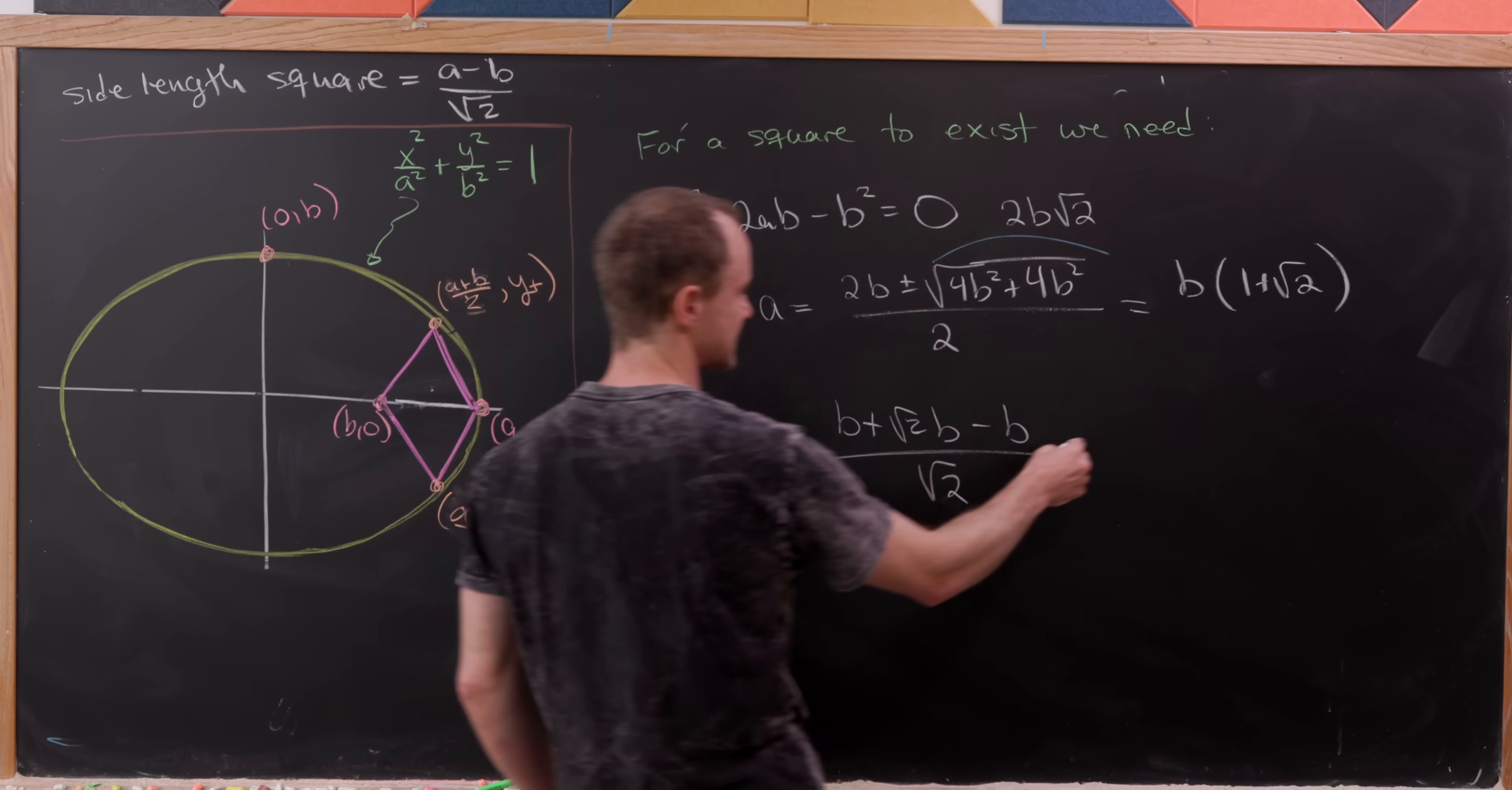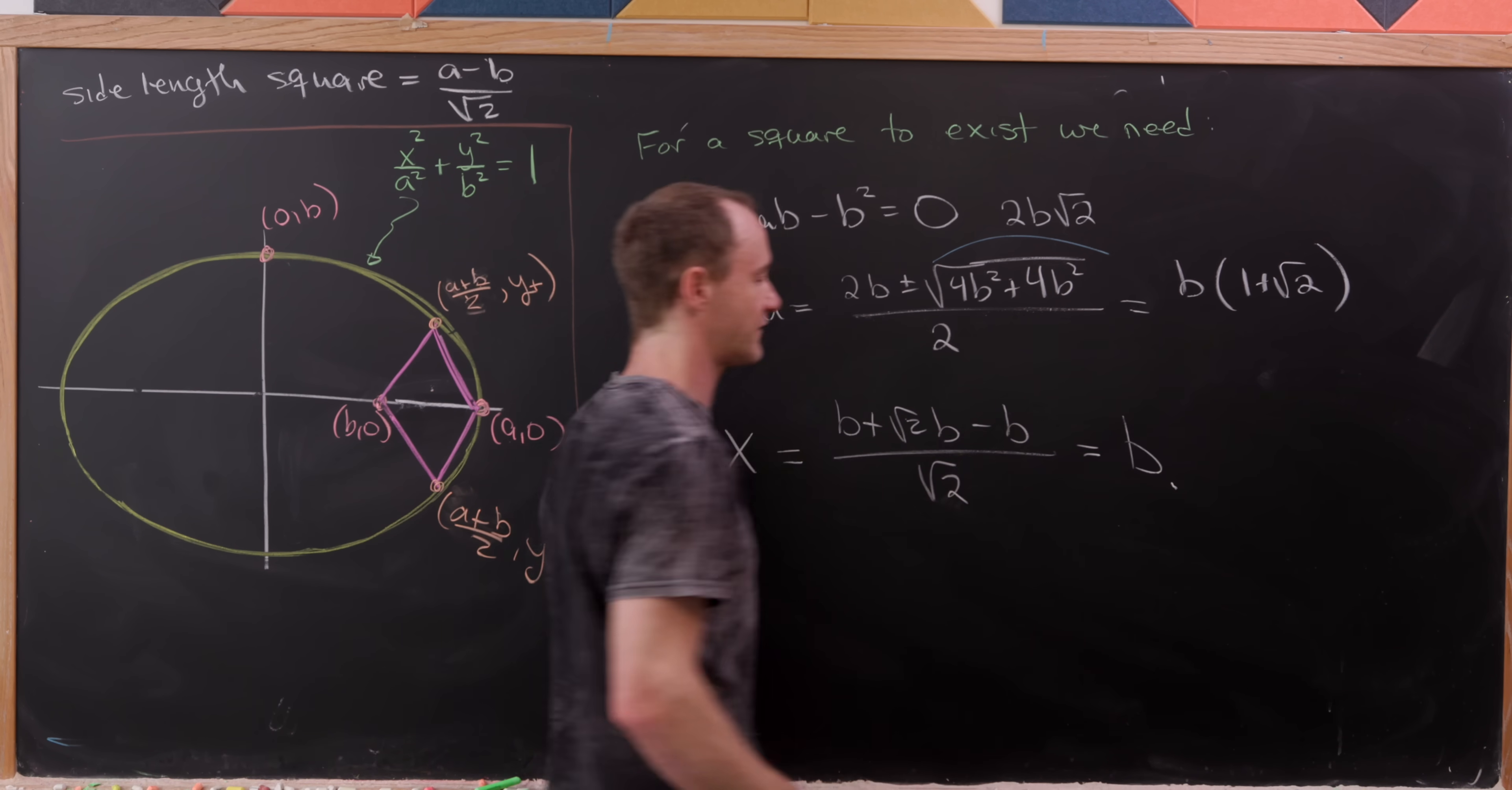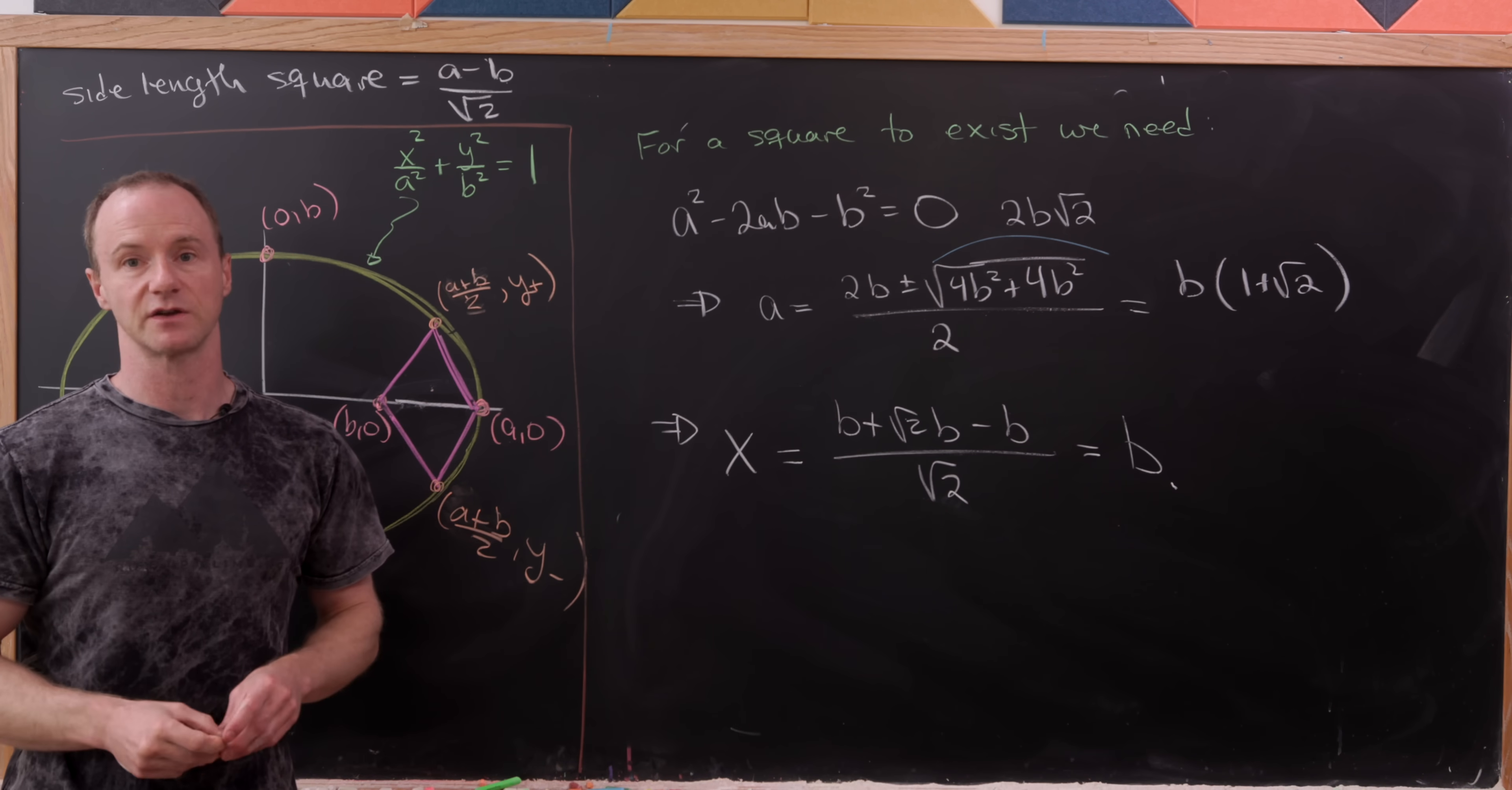But notice two of those b's cancel. The square roots of 2 cancel and we're left with b. And that's a good place to stop.